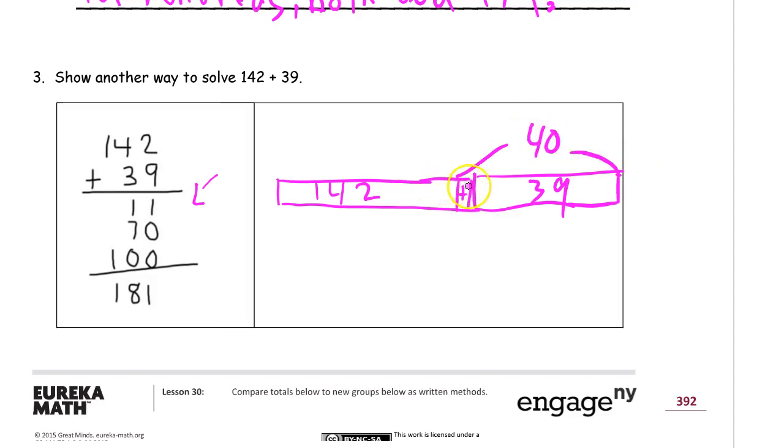But that 1 more, to make it a 40, had to come from 142. So now it's 141. And now this we can add. We can look at this and just add it in our heads. 141 plus 40 equals 181.